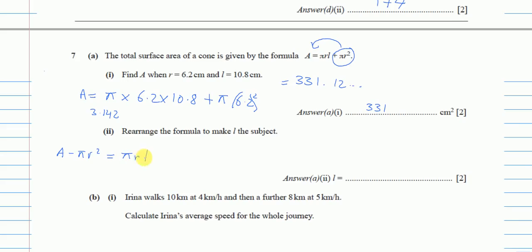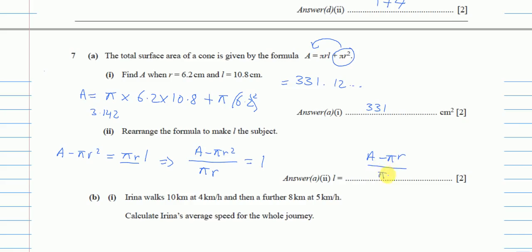Now π r are being multiplied with L, so on the other side they will be divided. It becomes: L equals A minus π r squared, all divided by π r. So this is my answer: (A minus π r squared) over π r.